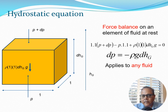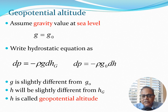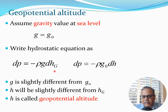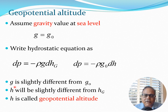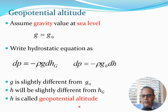We know gravity at sea level is g₀. The hydrostatic equation is dp = −ρ·g·dhg. We can also write an alternative form: dp = −ρ·g₀·dh, where we replace g with g₀ and accordingly replace dhg with dh. Since g is slightly different from g₀, h will also be slightly different from hg. This new variable h is known as the geopotential altitude — a very important concept in aerospace and atmospheric science.